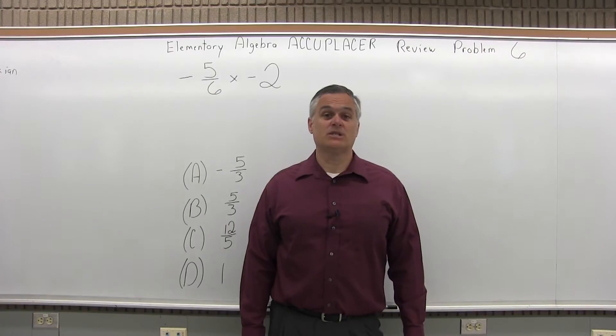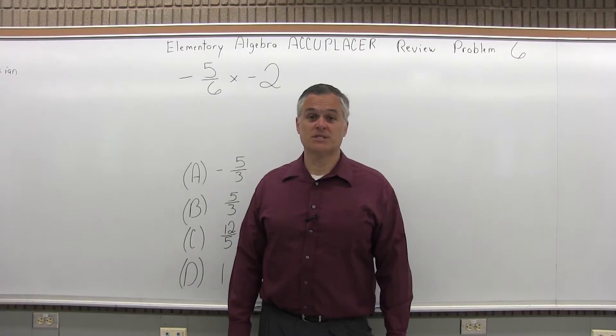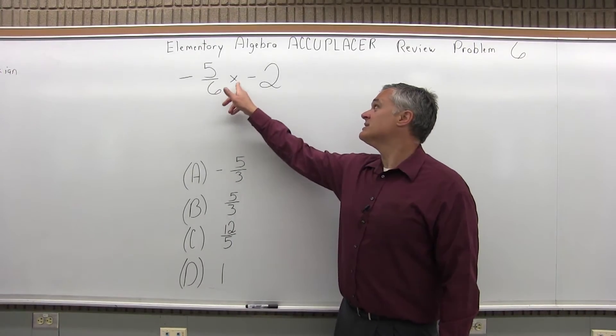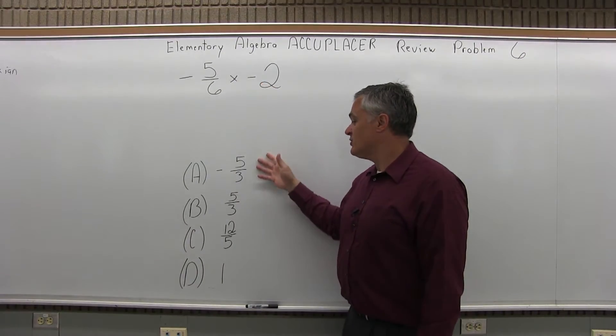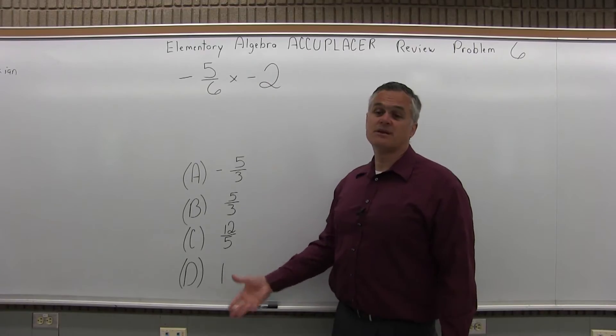This is the Elementary Algebra Accuplacer Review, Problem 6. We have negative 5 over 6 times negative 2. We want to solve that and see which one of the four options listed is a match.